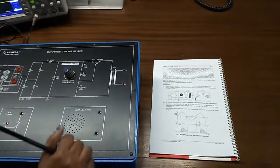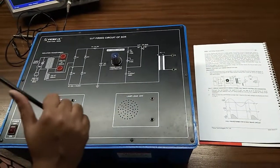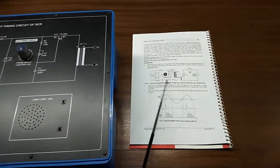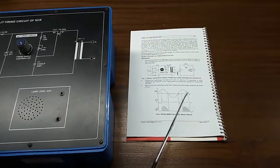So, our experiment for this kit is to study UJT firing circuit of SCR. This is the circuit diagram and the connection that we need to build, and we will observe this waveform in the CRO.